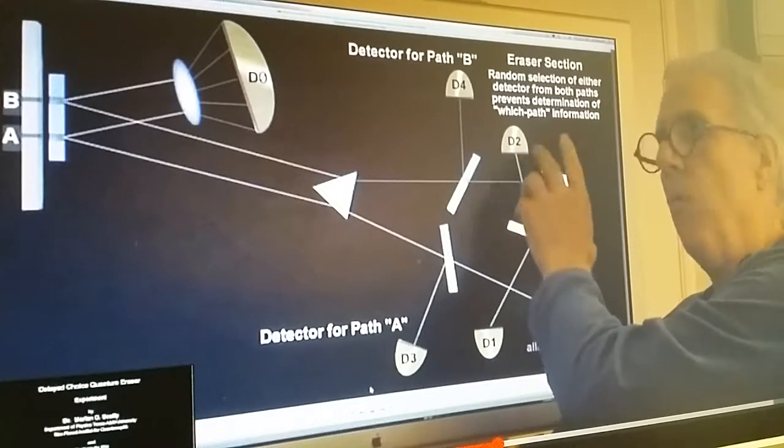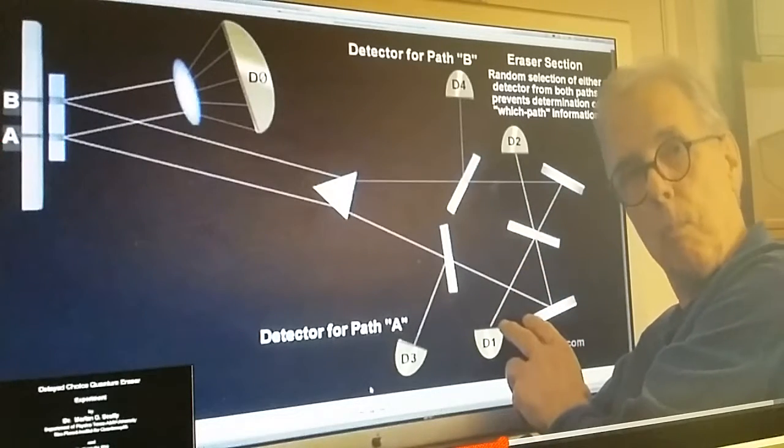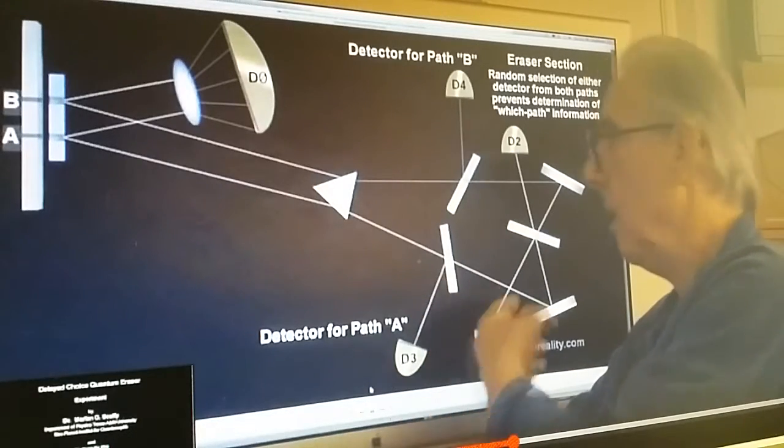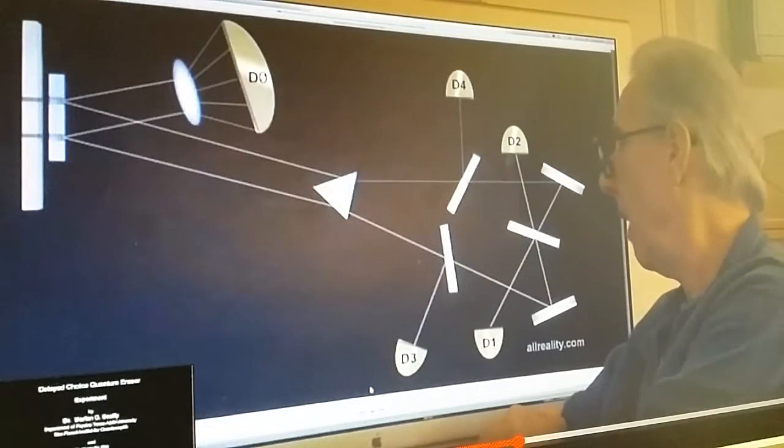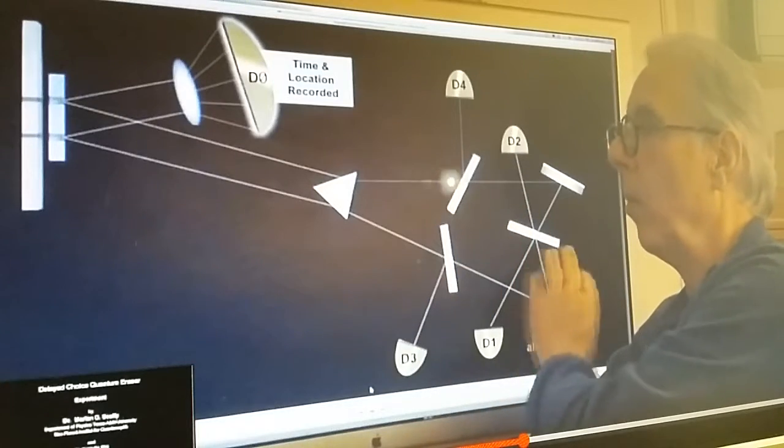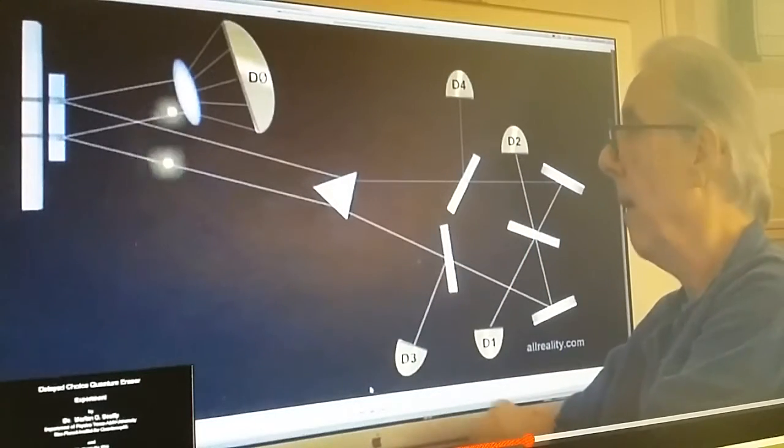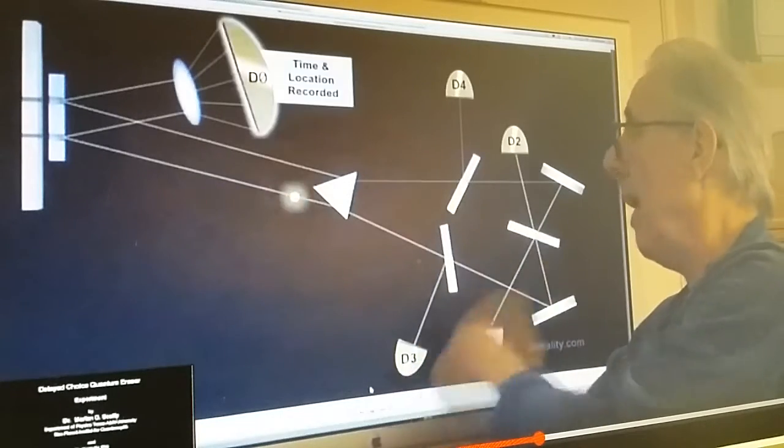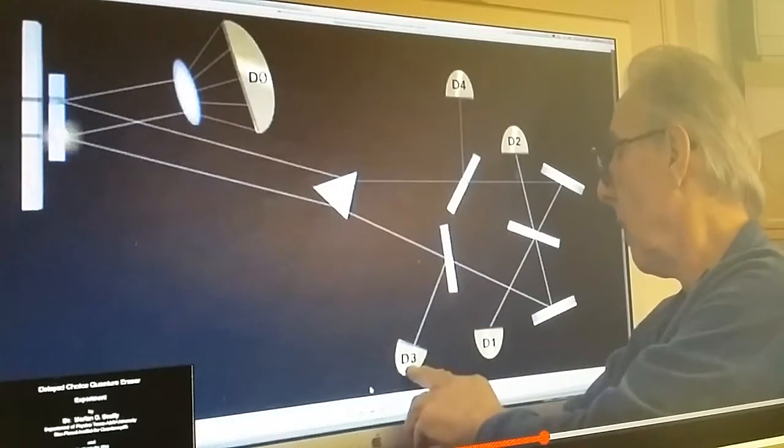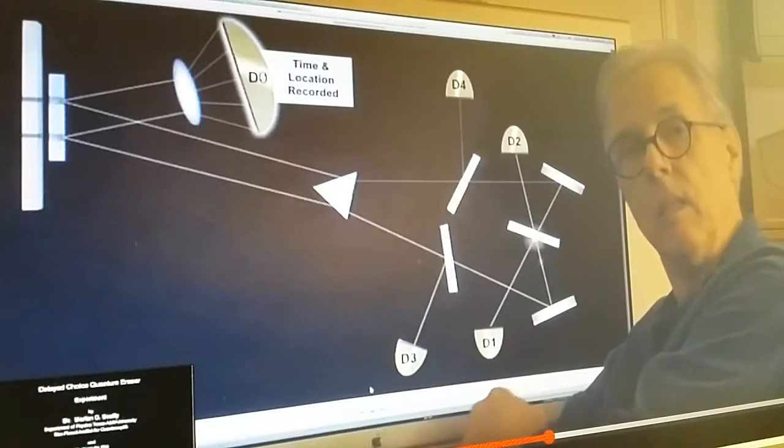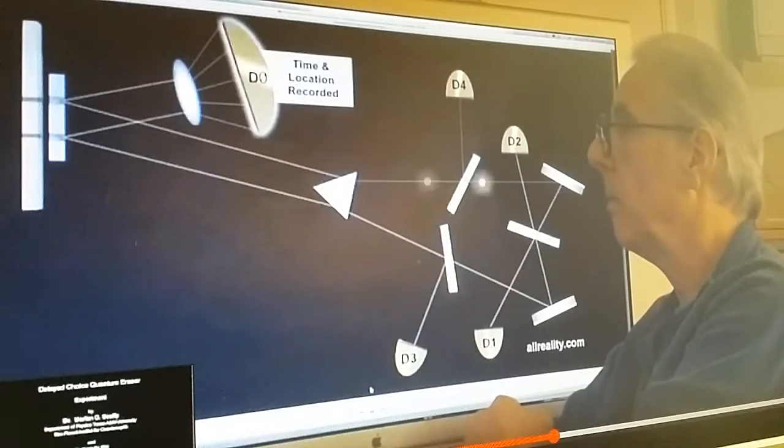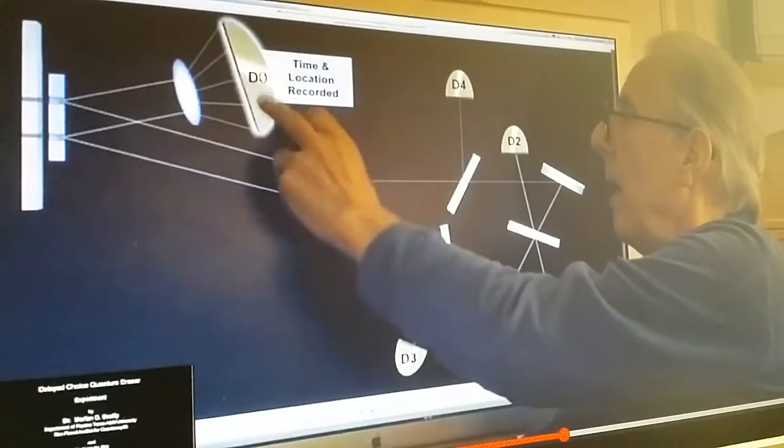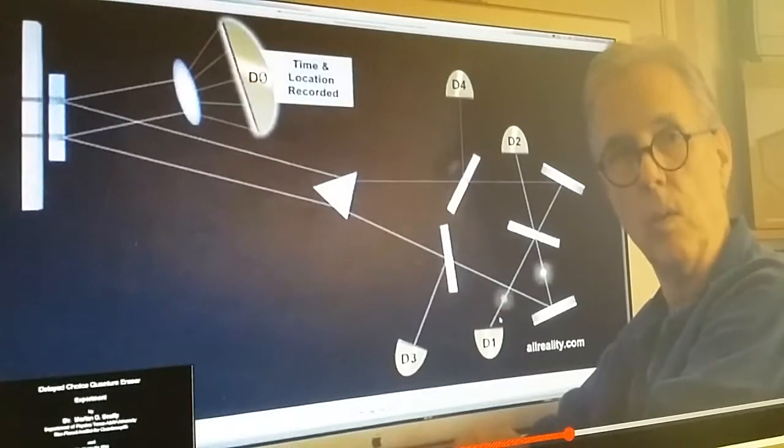So it's not erasing which path information, it's obfuscating it. It's not allowing you to know what the which path information was. Now when it gets to any of these detectors, the time at which it hits a detector is recorded. And the time at which the entangled pair hits the screen is also recorded.